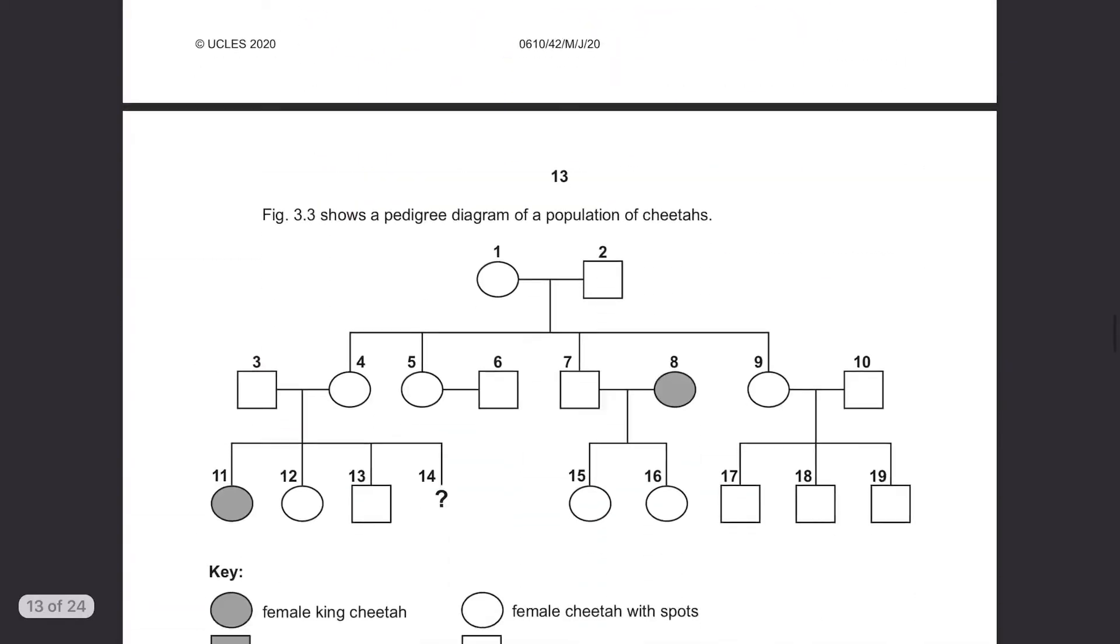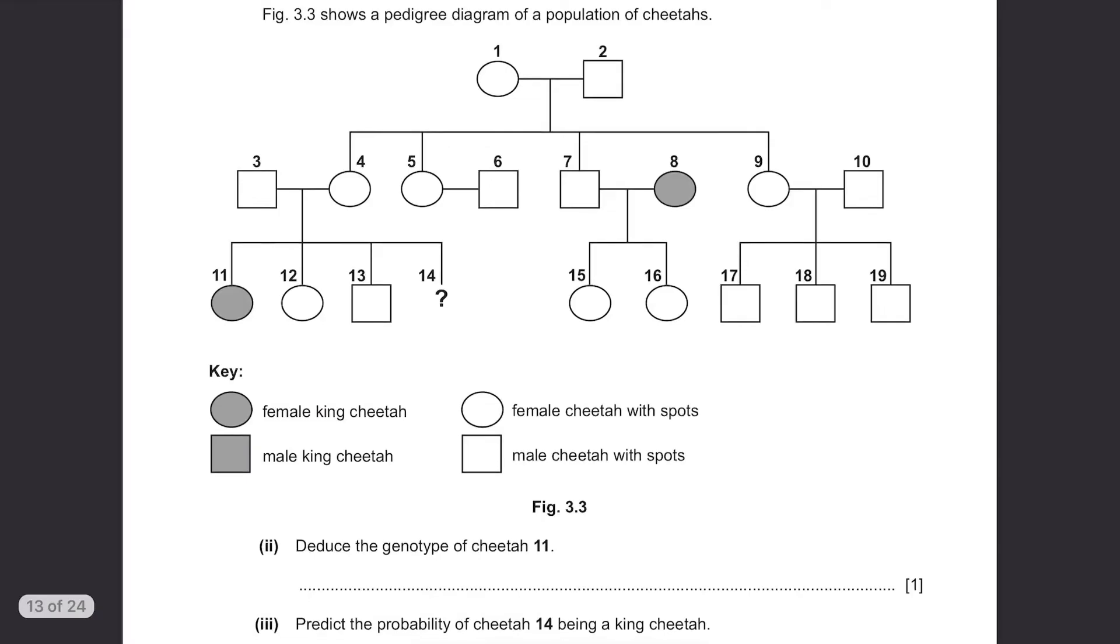Figure 3.3 shows a pedigree diagram of a population of cheetahs. Deduce the genotype of cheetah 11. The circle stands for a female and the square stands for a male. The shaded ones are king cheetahs and the others are cheetahs with spots. Cheetah 11 is here. It's a female king cheetah.